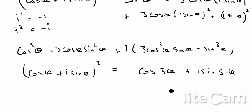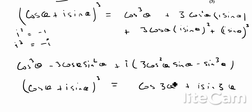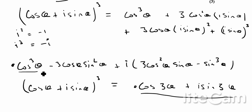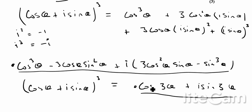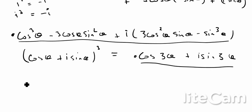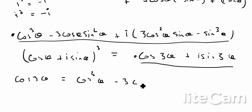Now that we have both expressions, we can equate the real and imaginary parts. This expression has to equal the other. Looking at the real part, cos3θ must equal cos³θ - 3cosθ sin²θ.